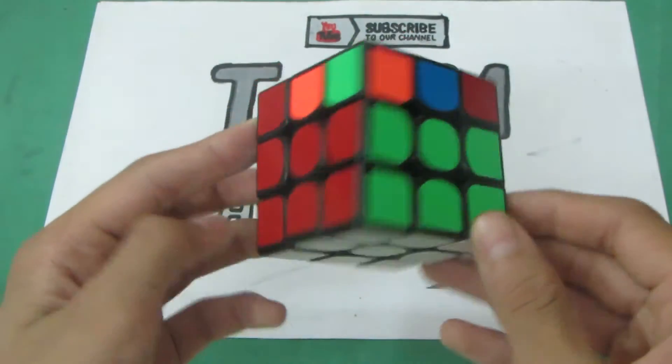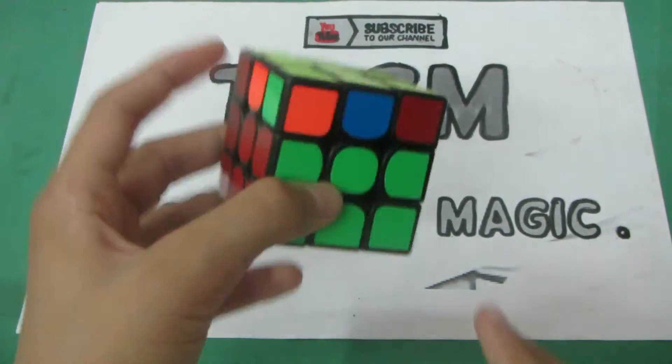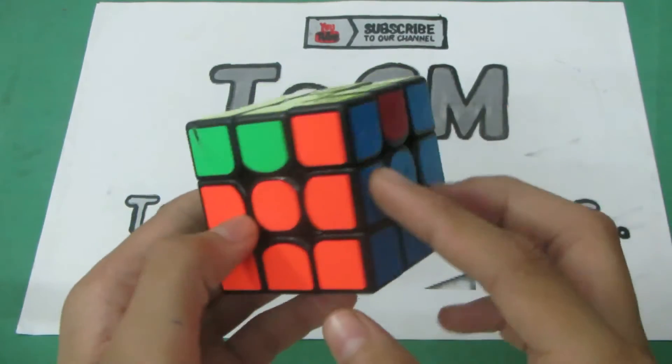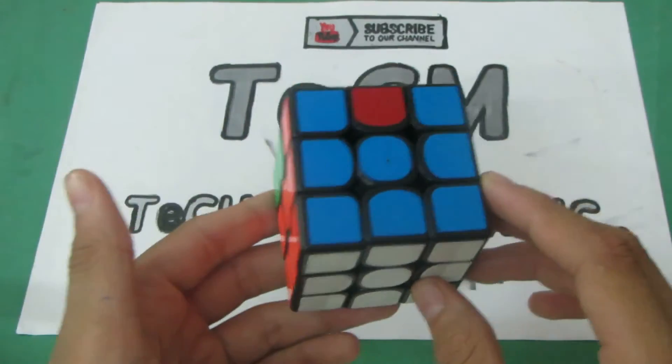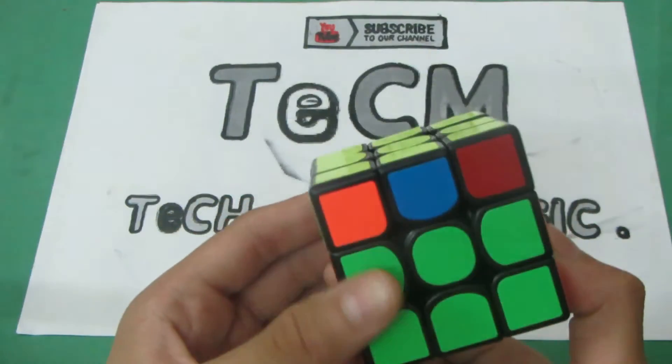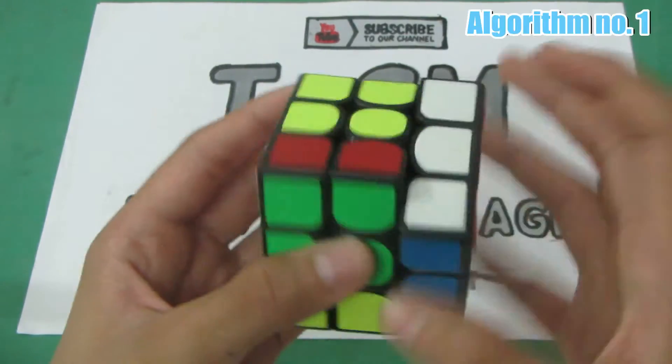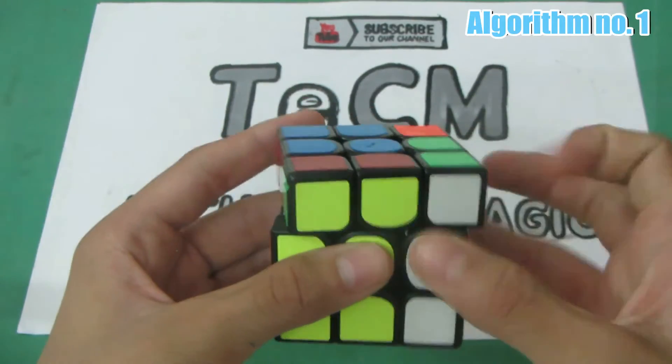So now it's time to use those algorithms. Step one: find a pair of headlights. As I told you back, what is a headlight - this is a headlight. Now you found one, get it at the back and do the first algorithm. That is R' F R' B2 R F' R' B2 R2.